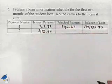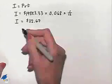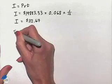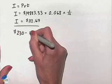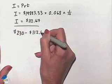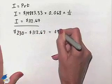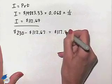Next, we'll figure out the principal payment. We'll take that interest and subtract it from the amount we're paying per month. So that's going to be $230 minus $112.67, giving us a difference of $117.33.